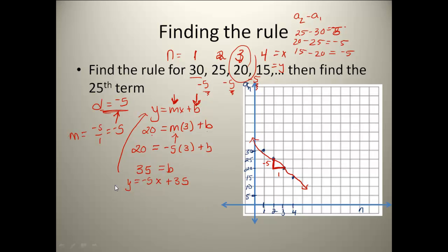This isn't the form that I want to write my rule in, because I want it in terms of n's and a sub n's. Well, n was really equivalent to my x value, so I'm going to replace my x with an n, and my y value was really my a sub n. So now I've got my rule for my particular sequence.